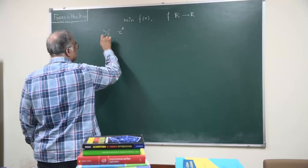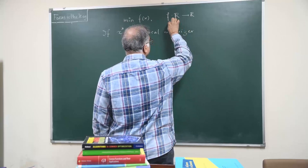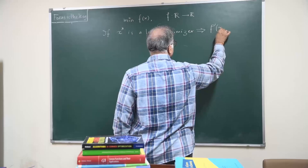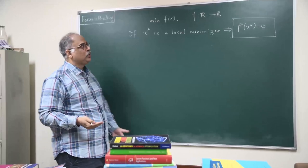If x star is a local minimizer, then the derivative at that point, assuming that f has a derivative, the derivative at that point must be equal to zero. This is a very important thing to understand that this condition that you have,